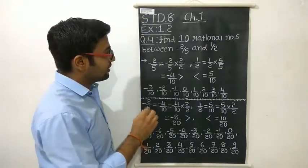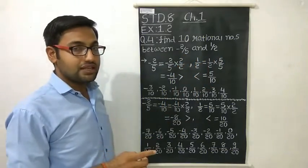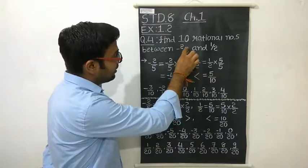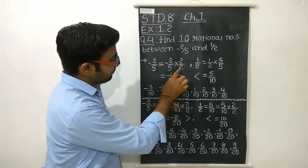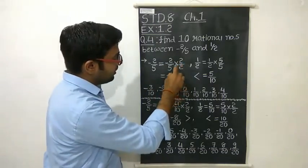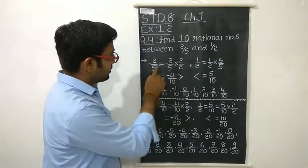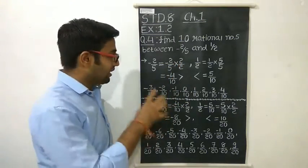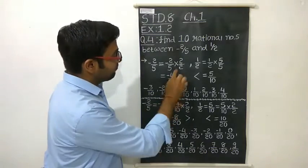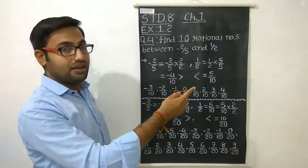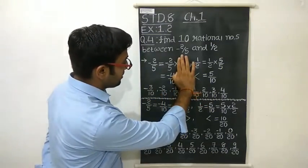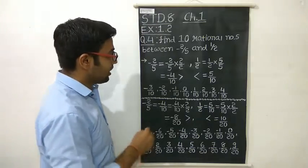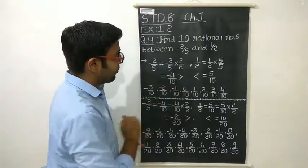To make the denominators same, we take the LCM of 5 and 2, which is 10. Now we have to make the denominator 10 for the first number. To do this, we multiply minus 2 upon 5 by 2 upon 2. We are not changing the value of minus 2 upon 5 because we multiply both numerator and denominator by the same number, so they cancel. This gives minus 2 × 2 = minus 4 in the numerator and 5 × 2 = 10 in the denominator, so minus 2/5 becomes minus 4/10.